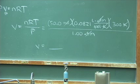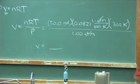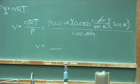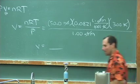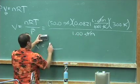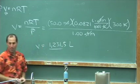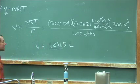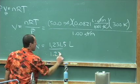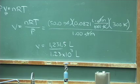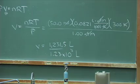Go ahead and take a moment and solve this. We have three significant figures. Knowing we need to express this to three sig figs, the answer is 1.23 times 10 to the third liters — 1,000 liters. That's a pretty good-sized balloon. Nice job.